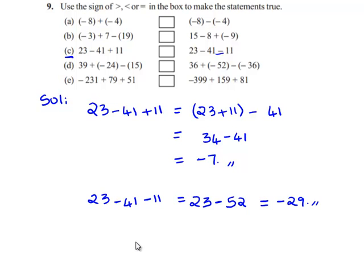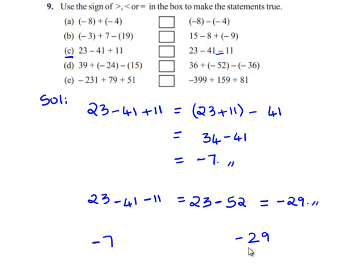We will note down the values obtained: on the left hand side we got minus 7, and on the right hand side we got minus 29. On comparing the two values, we can clearly see that minus 7 is greater than minus 29. Therefore we give the sign greater than — hence minus 7 is greater than minus 29.